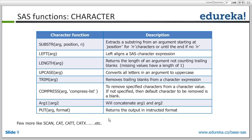SUBSTR takes an argument and starts from a position for a specified number of characters - it's not 'till' that position but 'for these many characters'. If there's no length argument N, it pulls the substring till the end. LEFT will align a string as left-aligned. LENGTH returns the length of the string, and if it is missing or blank, it returns one - not zero, be mindful of that. UPCASE changes the case from any case to upper letters. TRIM removes trailing blanks.